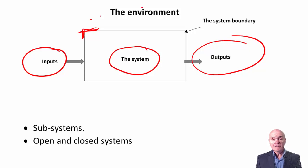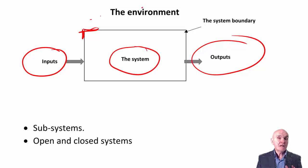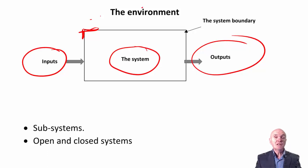The second thing to note about systems is the business of open and closed systems. Most systems are open, meaning they have some sort of communication or input-output with the environment, and nearly all systems have that. In theory, you can have a completely isolated and closed-off system which has no interaction with its environment whatsoever. It's very difficult to think of a commercial example of this — it is more almost a scientific example.